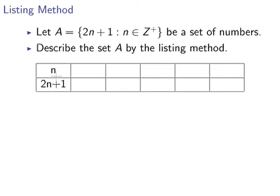Suppose we have a set A that's defined by this rule of inclusion. This is the builder method, also known as the rule of inclusion. So this is like a formal rule, this bit here.